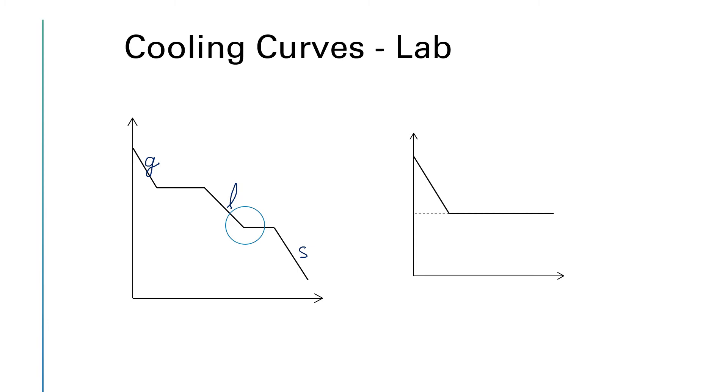And if we blow up just that little elbow you get a nice cooling curve that looks something like this. You can read the freezing point which is the same temperature as the melting point, just reverse direction. You can read that just by reading the temperature of that horizontal plateau as that's marked.